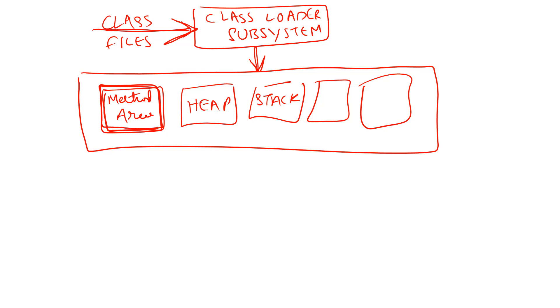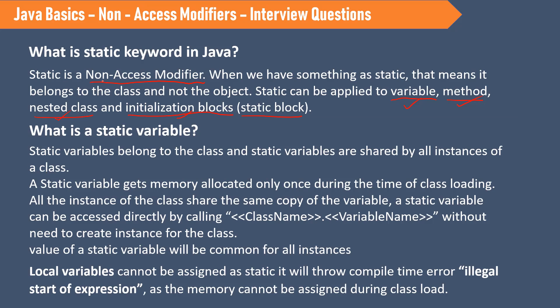Whenever the class loader subsystem loads the class files into JVM, the static variables will be allocated with memory. In the same class, we can access them directly without needing to use an object. But if it is in a different class, we can use class name dot variable name. We don't need to create an instance for the class, and the value of the static variable is the same for all instances.